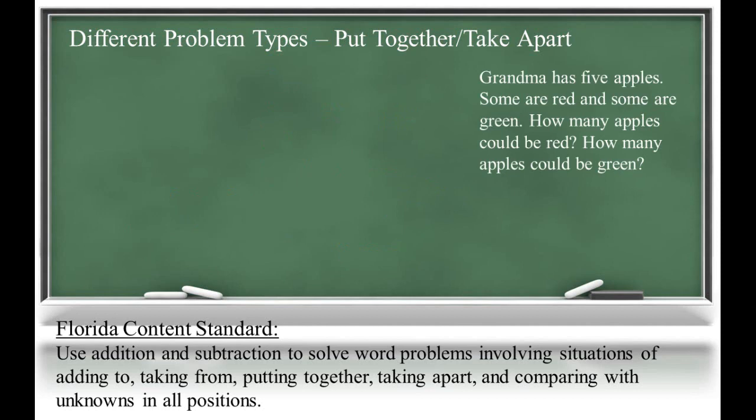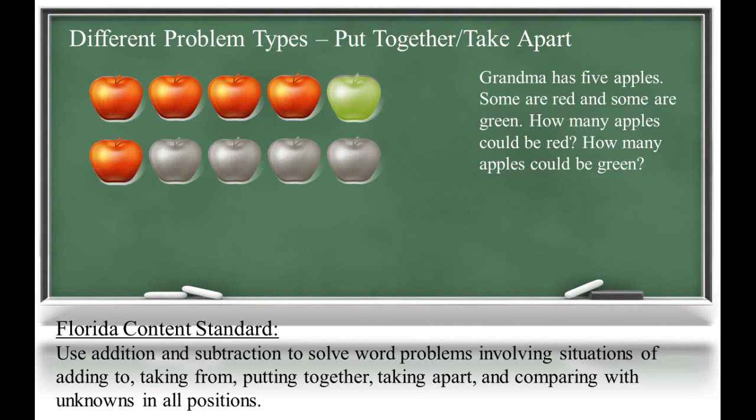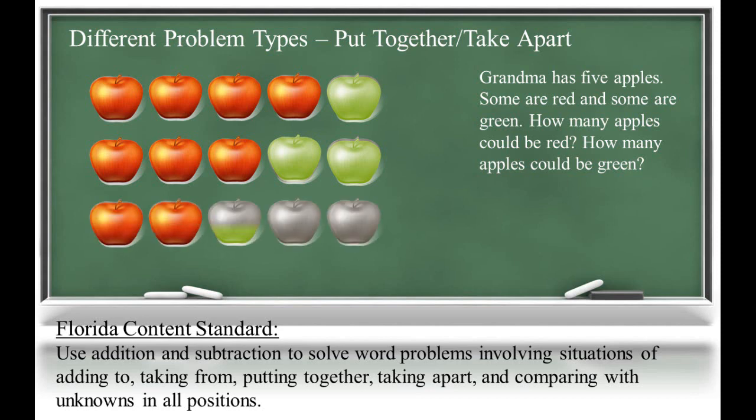The third problem is a little more open-ended. Grandma has five apples. Some are red and some are green. How many apples could be red? How many apples could be green? Here we know the total, but both parts or addends are unknown. Students should be able to come up with different combinations of numbers that add up to five. For instance, four plus one equals five. Three plus two equals five. Or two plus three equals five. How many more can you come up with?